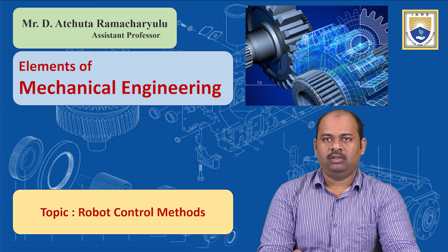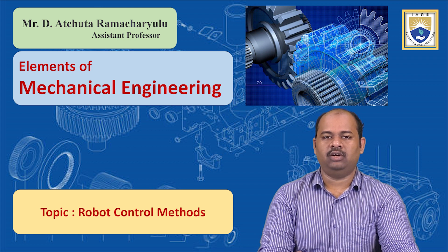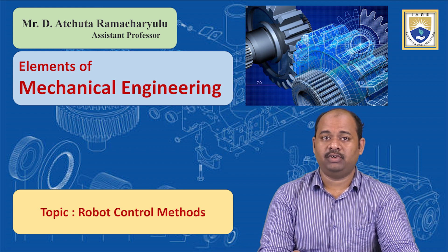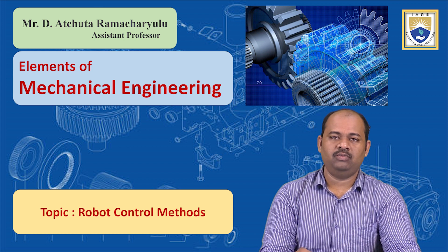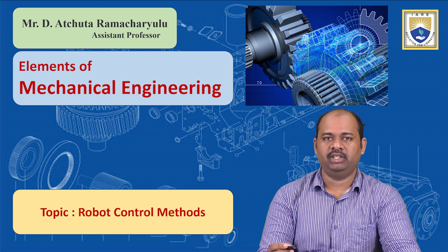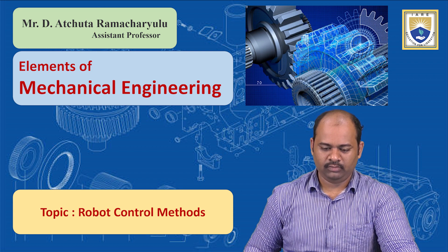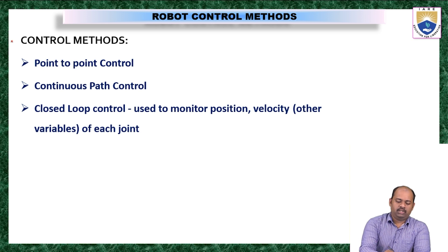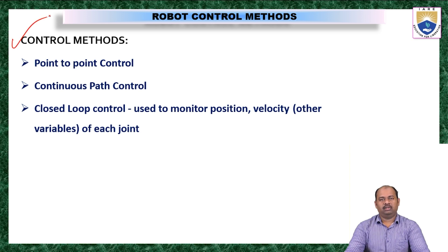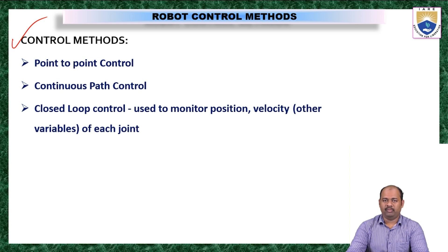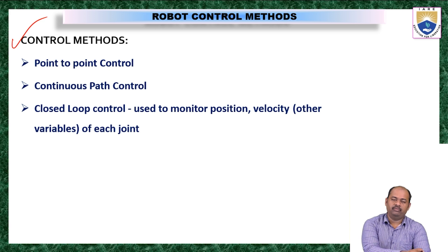The third part is robot control method — how a robot is being controlled. There are different ways of controlling a robot. A control method is the process by which a robot is operated, or simply put, it is the set of instructions given to a robot for functioning.